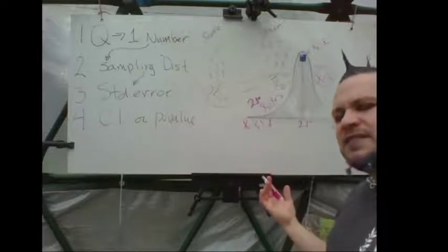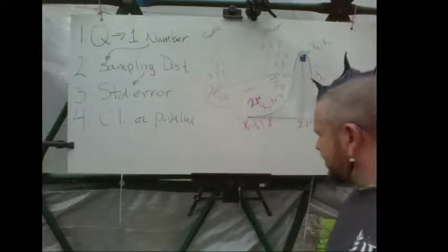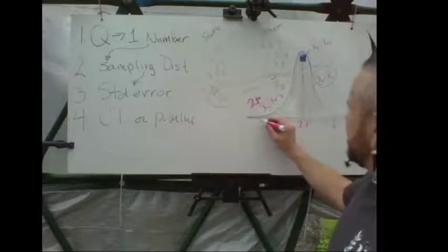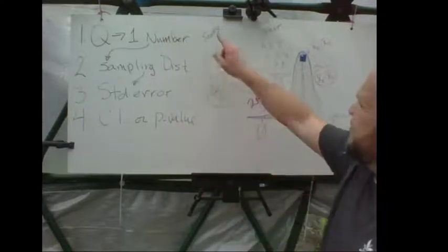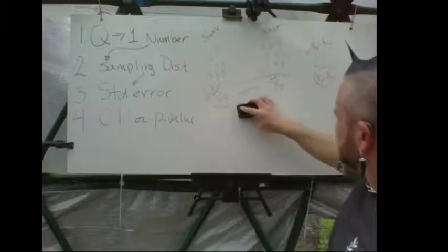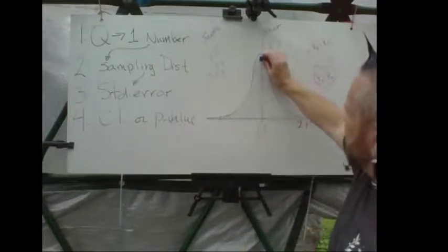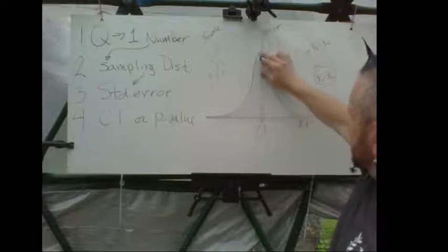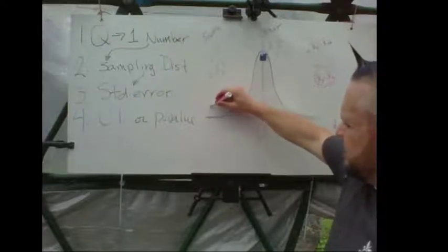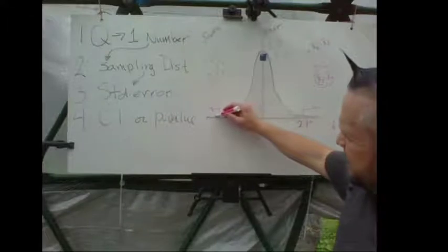You can get a confidence interval using the T distribution — T is like Z but slightly tweaked. Or, if you're doing a hypothesis test, your null hypothesis says the difference should be zero, because if there's no difference, this minus this will be zero. You center the sampling distribution over zero, set alpha — say 0.01 — with rejection regions on each side, each containing half of alpha.